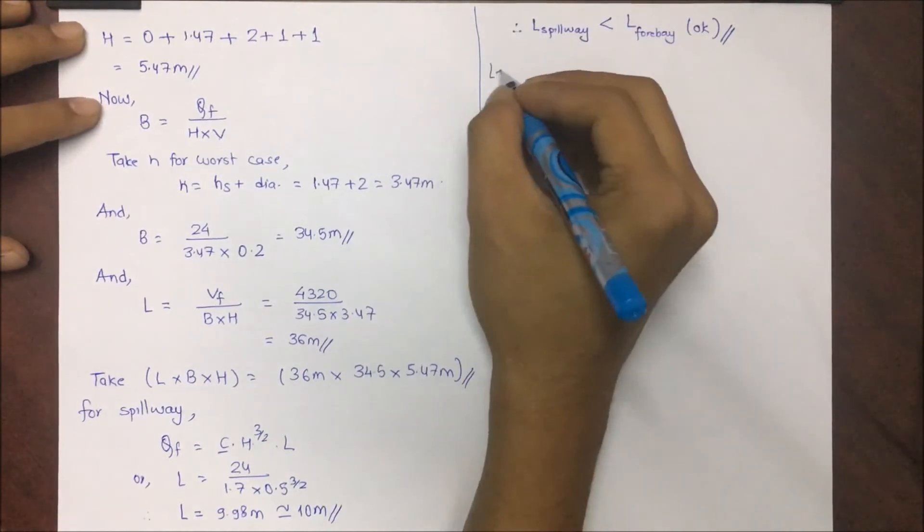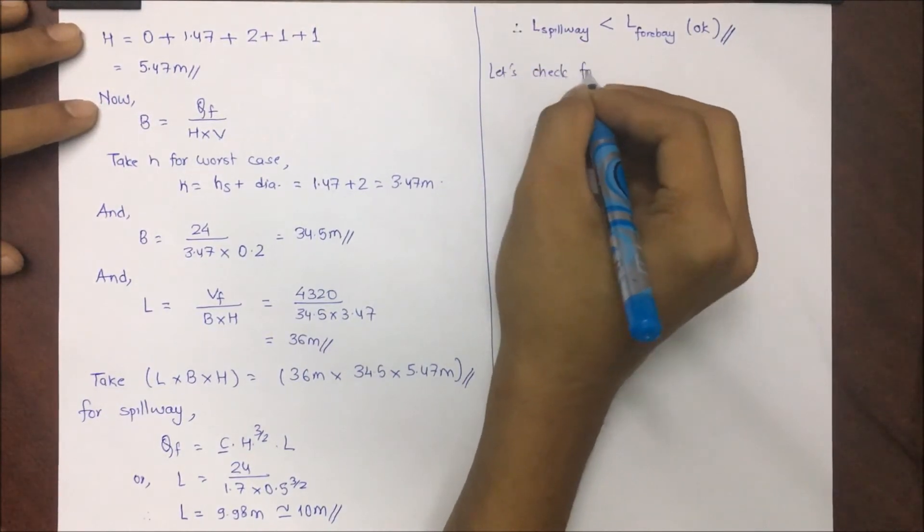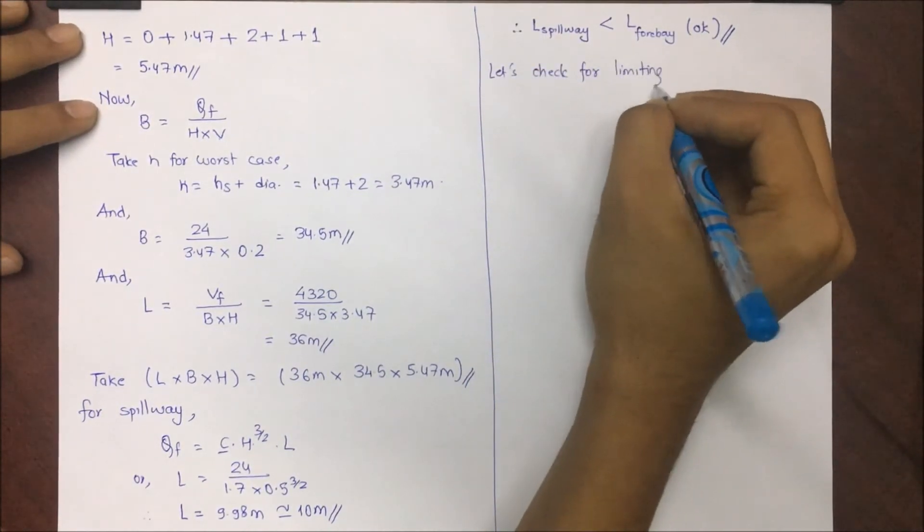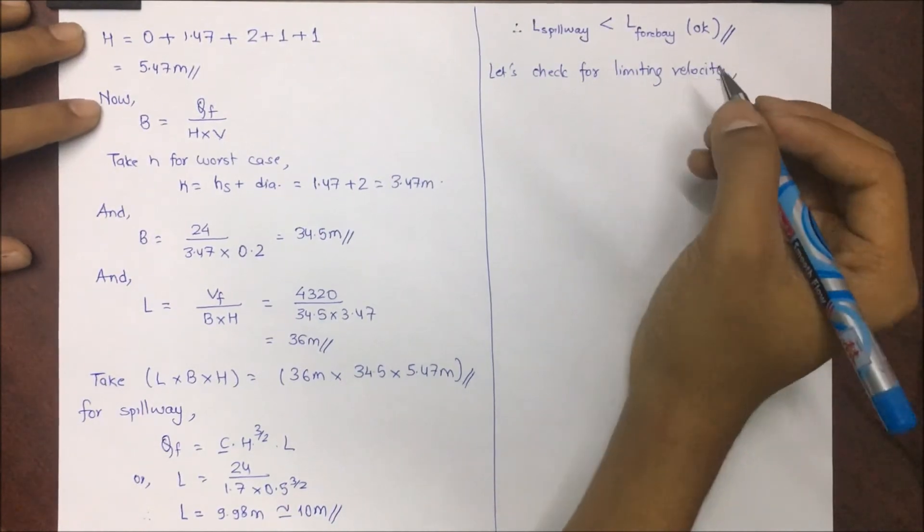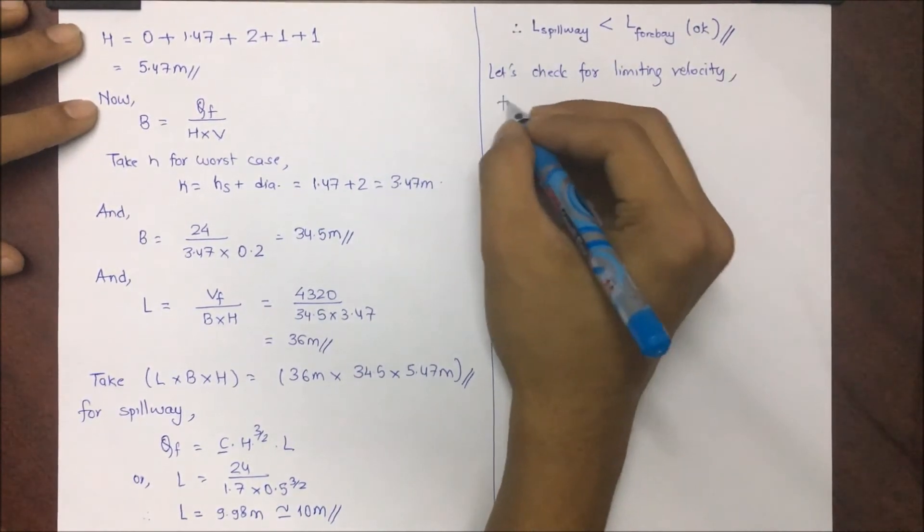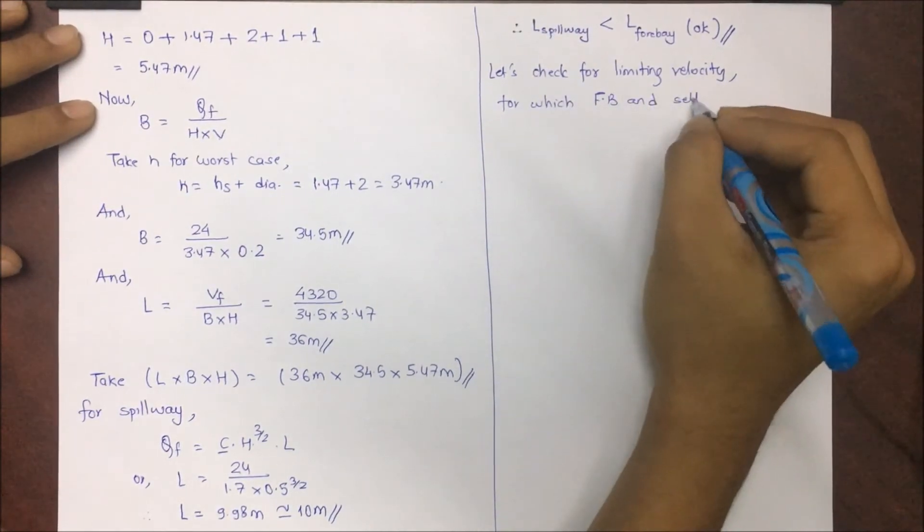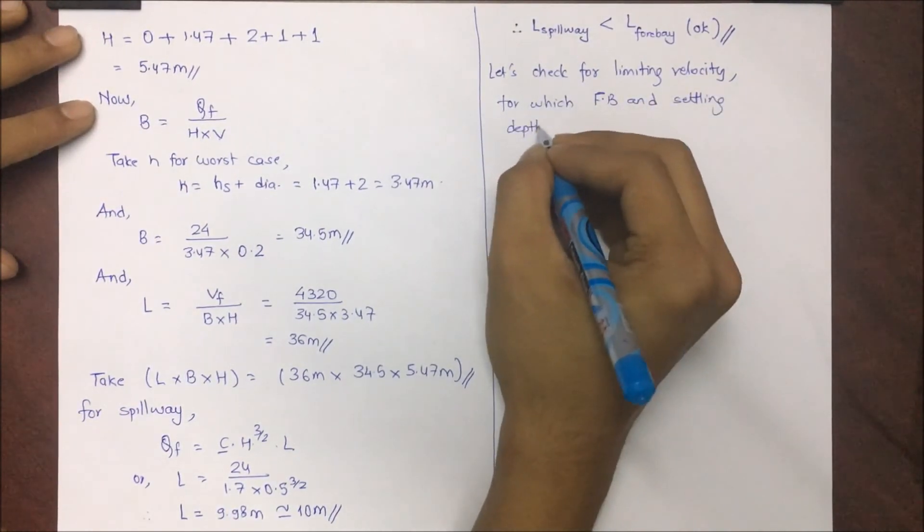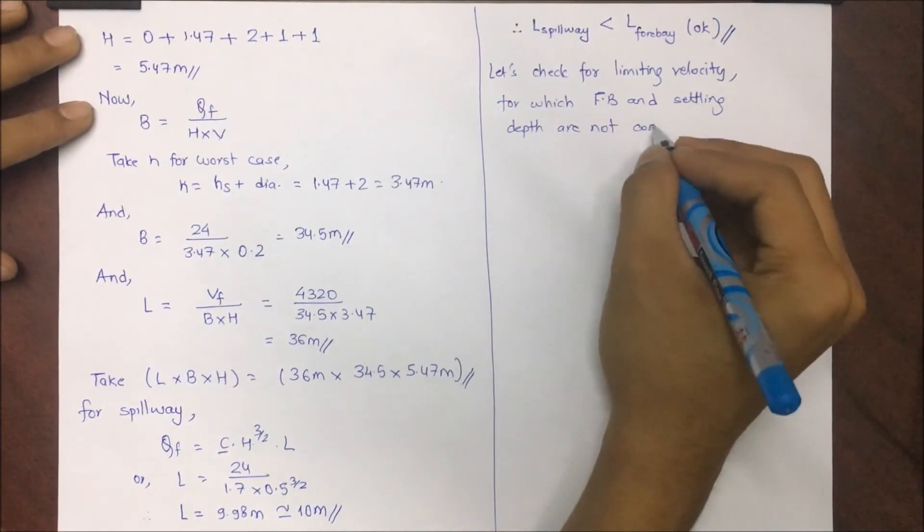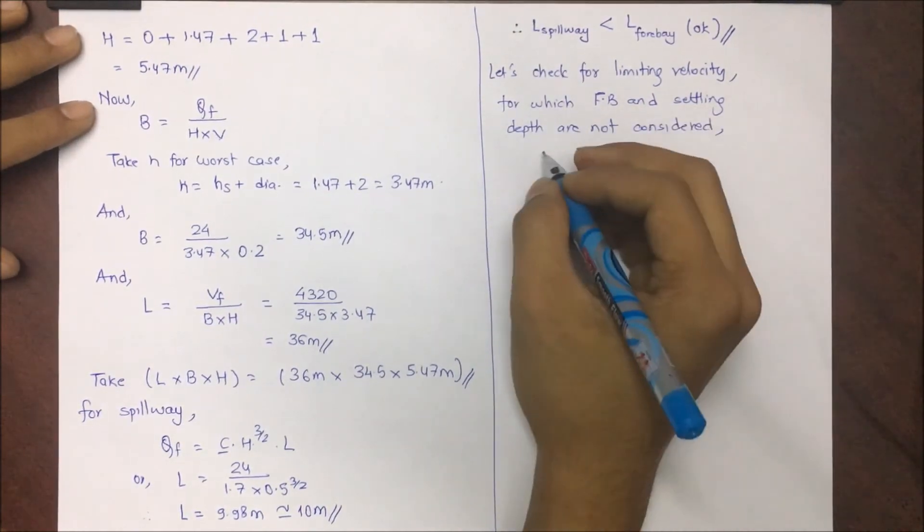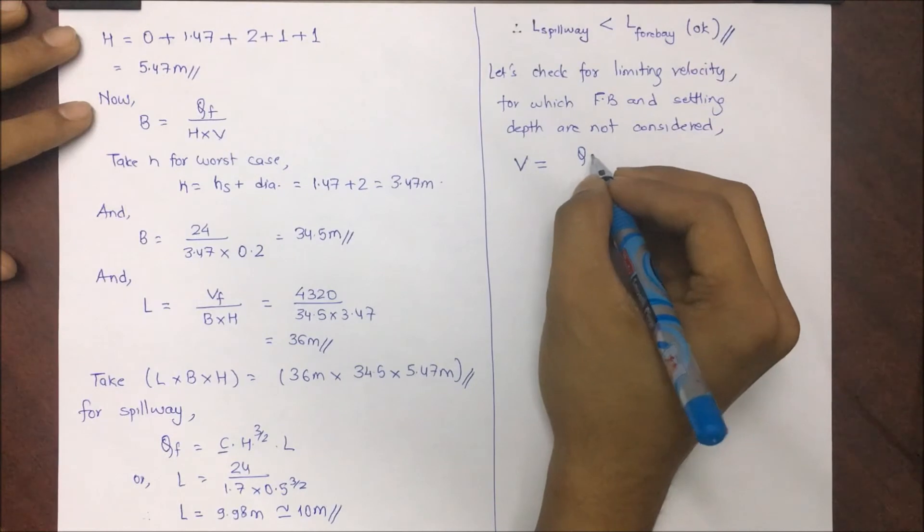Now we have to make a check. Length of spillway is less than length of forebay, so this is okay. Also check for the limiting velocity. As we have considered the worst case and the dimensions of the forebay are designed, we have to check for the limiting velocity.